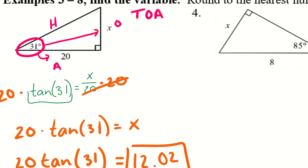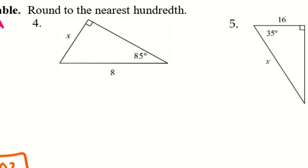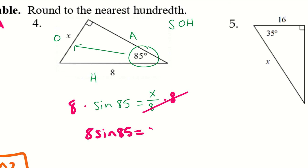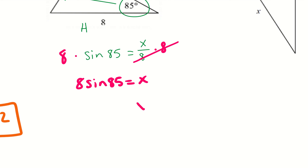Let's look at example 4. We have 85 degrees as our angle — I have hypotenuse, opposite, and adjacent. It looks like I have OH, which is SOH — sine. So sine of 85 equals X over 8. Multiply by 8 on both sides, giving 8 times sine of 85 equals X. Plug in 8, press sine, then 85, close the parenthesis, press equal — we should get X ≈ 7.97.